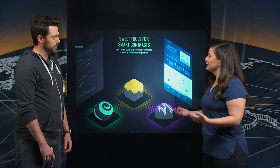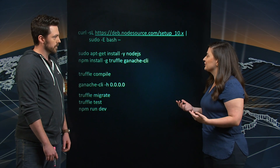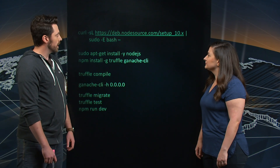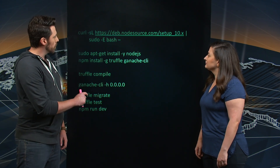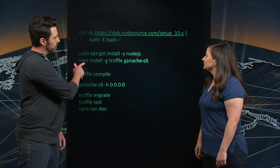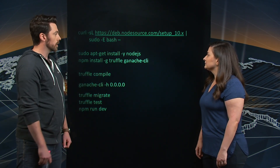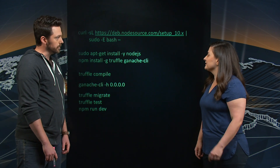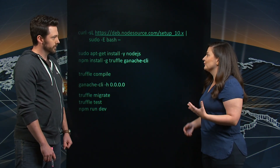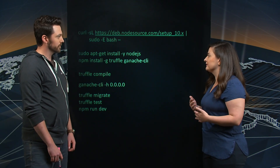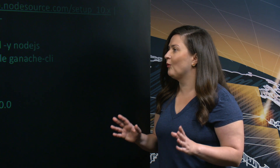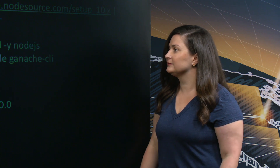How do I start building my first Truffle application or smart contract? First, install Node, and then install the Truffle suite of tools. Here we're using Truffle and Ganache CLI in this example, running in Cloud9. So Truffle is the framework and Ganache CLI is the simulation environment to run your code and smart contracts.